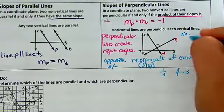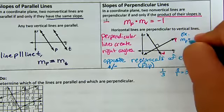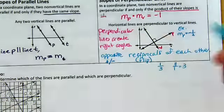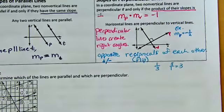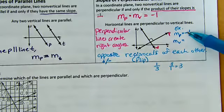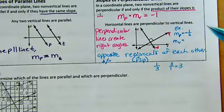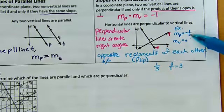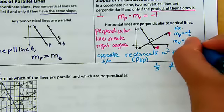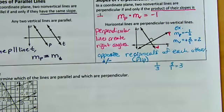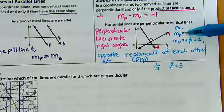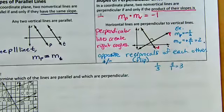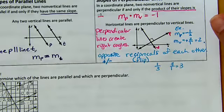What does reciprocal mean? It flips. The reciprocal of two is one over two. The reciprocal of one-third is three over one, which equals three. So perpendicular lines are opposite reciprocals of each other — meaning the other slope has the opposite sign and is the flip of it. For example, if the slope of line P is negative one-half, then the slope of line V would be positive two: the negative becomes positive, and one over two flips to two over one.